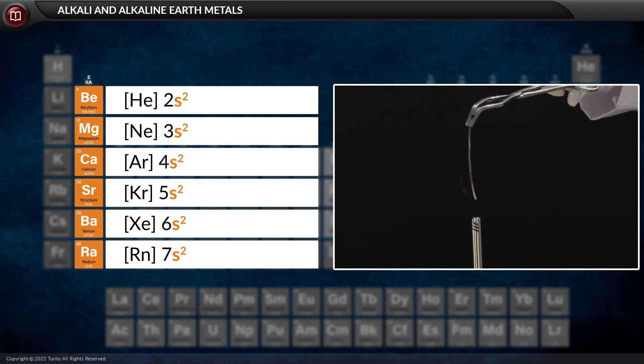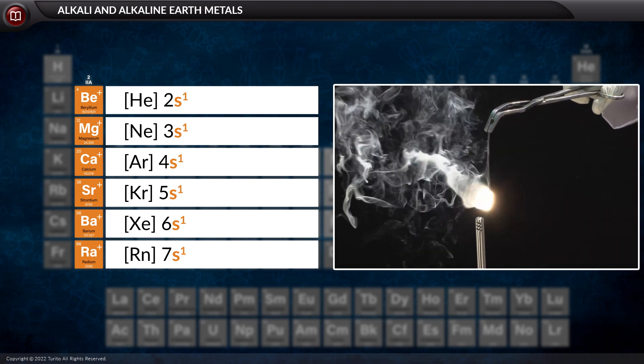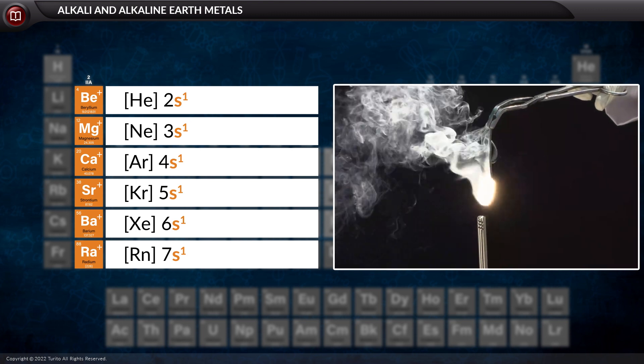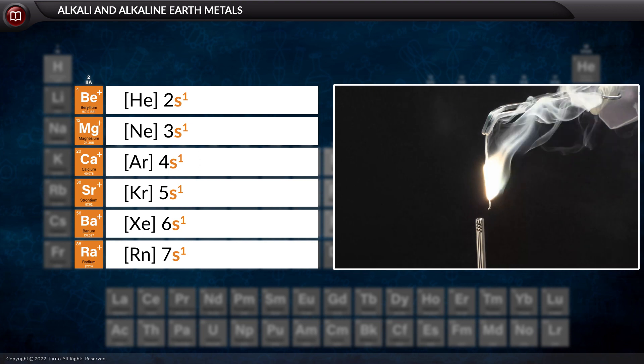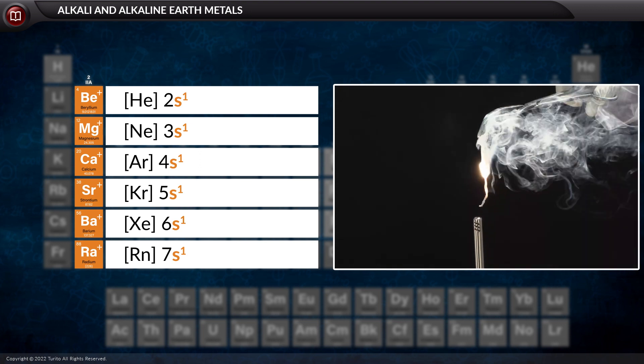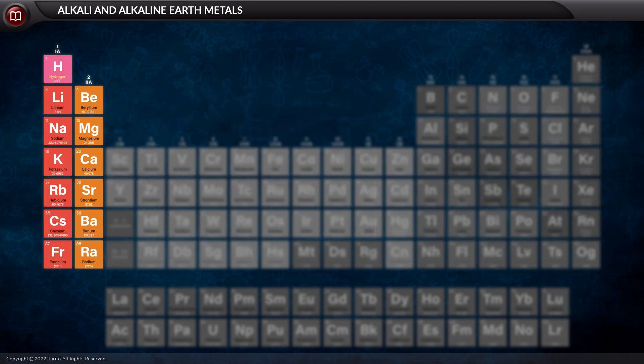However, once the absorption of energy and after it loses one electron, it is left with one more electron in the s subshell which it wants to readily lose to attain stability, just like the alkali metals. And that is all about alkali and alkaline earth metals today.